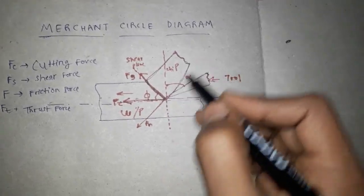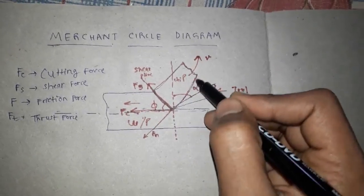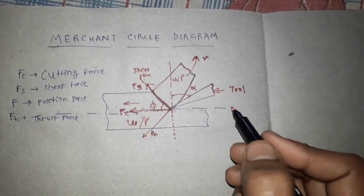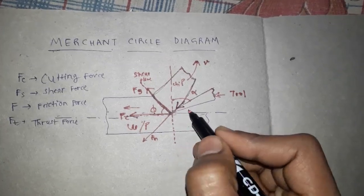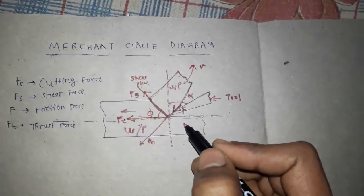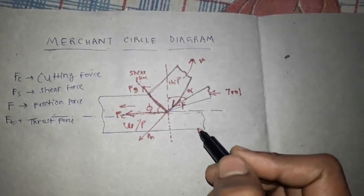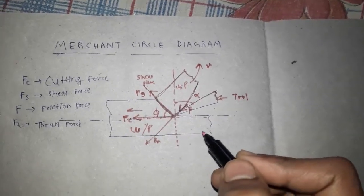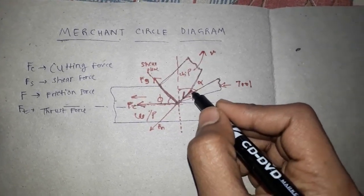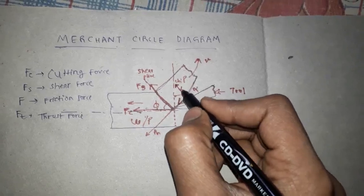The velocity of the chip is in this direction, so the friction force acts in the opposite direction — this is the friction force, denoted by F. The chip also applies force on the tool, and here also a normal force comes into action, acting perpendicular to the friction force, denoted by N.